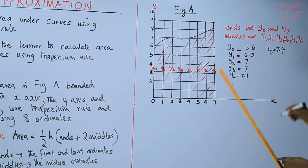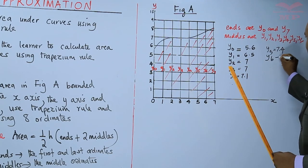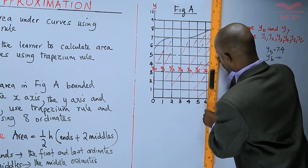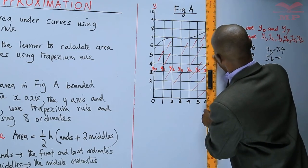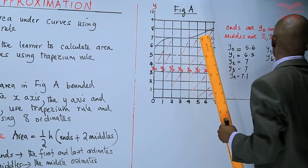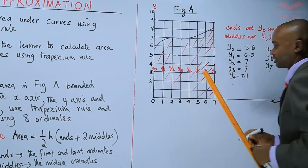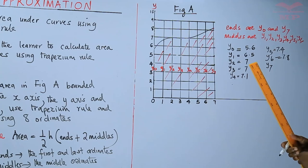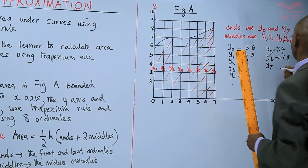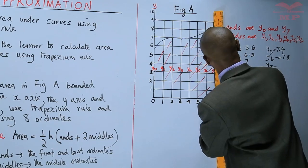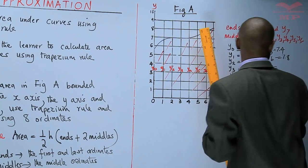We come to y6, the second last. It is 7.8. And the last one y7 is 8.2.